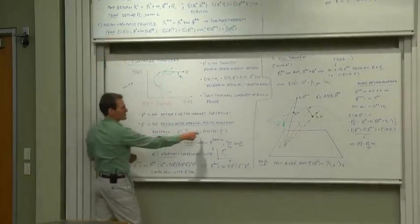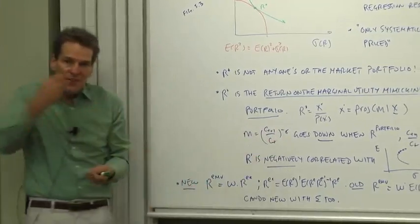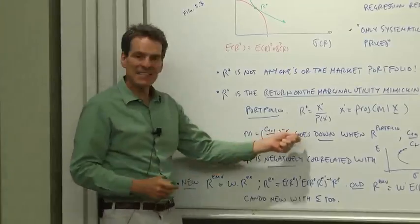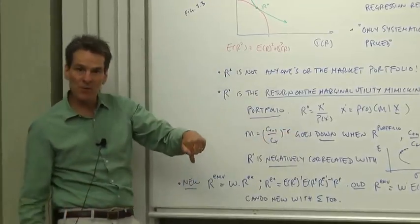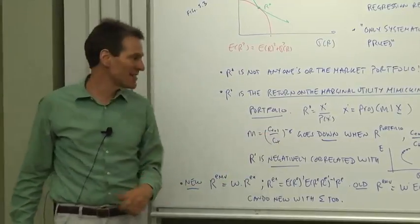X star was the projection of the discount factor on X, and the discount factor is something like consumption growth to the minus gamma. So the discount factor goes down when returns on your portfolio go up. It's a measure of hunger. It's a measure of bad times.